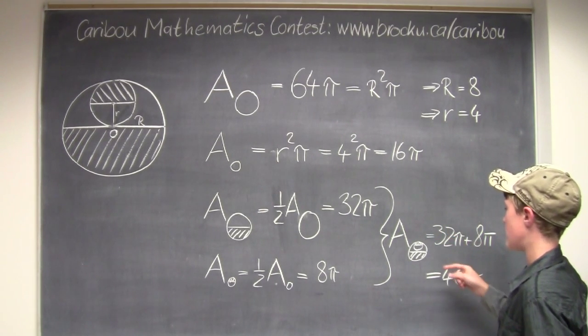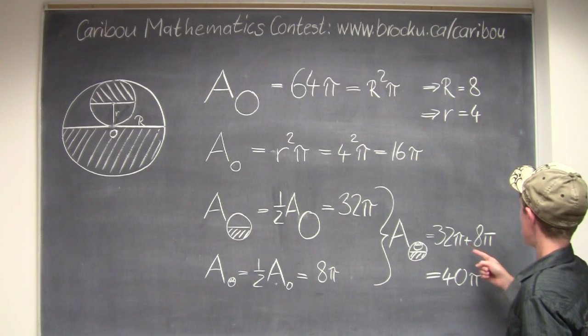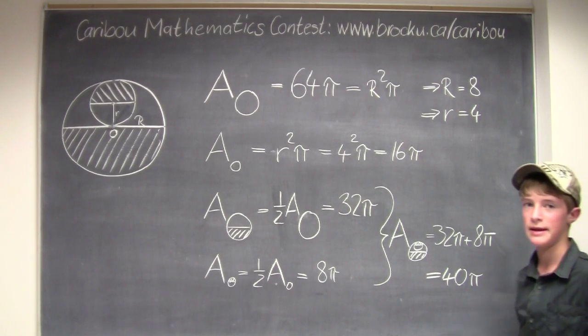Now we just add up the total area of the shaded region, which would be 32 times pi plus 8 times pi, which would equal 40 times pi. So 40 times pi would be the answer.